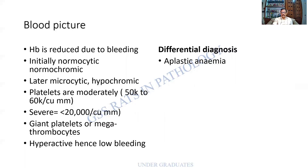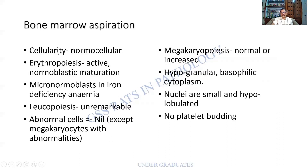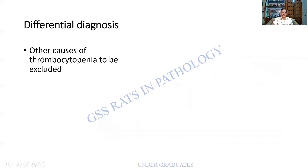A differential diagnosis to keep in mind when platelets are absent is aplastic anemia. Bone marrow aspiration in chronic ITP: cellularity is normal; erythropoiesis is active with micronormoblasts due to iron deficiency; leukopoiesis is unremarkable; no abnormal cells. Megakaryocytes are abnormal — megakaryopoiesis is normal or increased as a reaction, but megakaryocytes are hypogranular with basophilic cytoplasm, small hypolobulated nuclei, and no platelet budding. Other causes of thrombocytopenia, such as aplastic anemia, must be excluded.